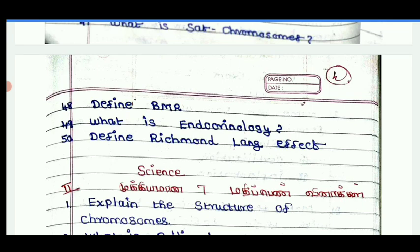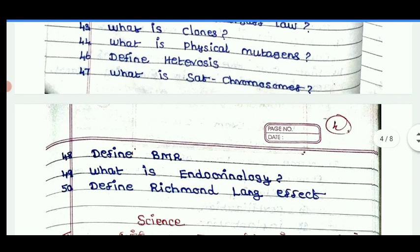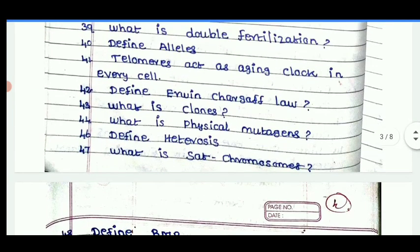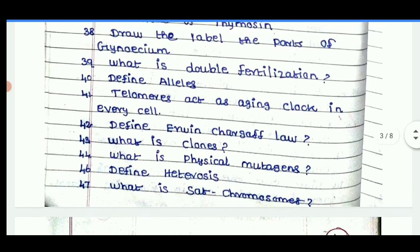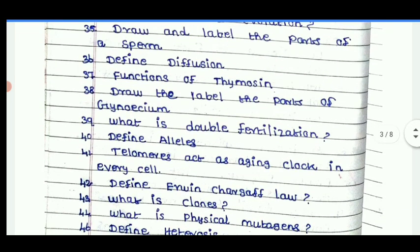Define Richmond effect. What is Cento Cornology? Define BMR. What is Sat Chromosome? Define Eterosis. What is Physical Mutagens? What is Clones? Define Erwin Sarcofla.